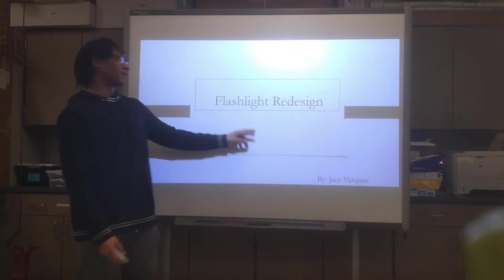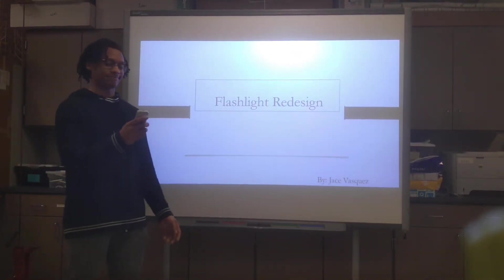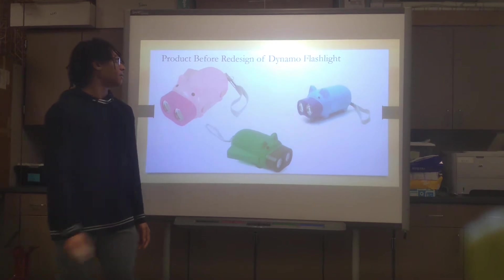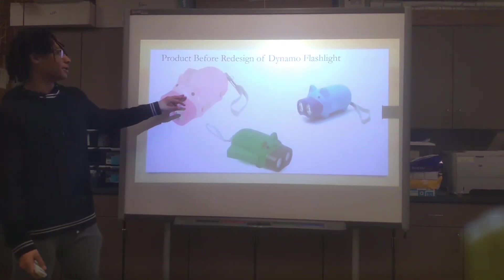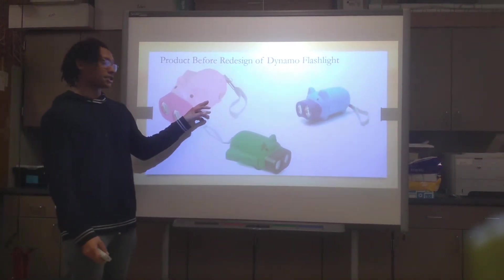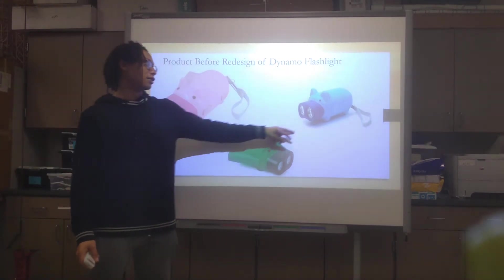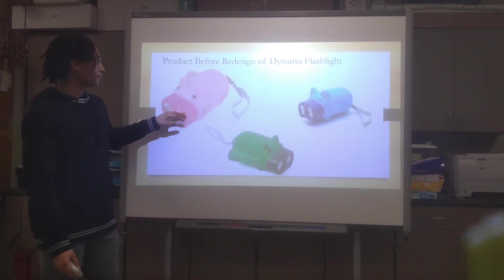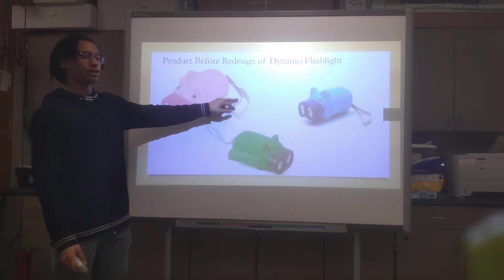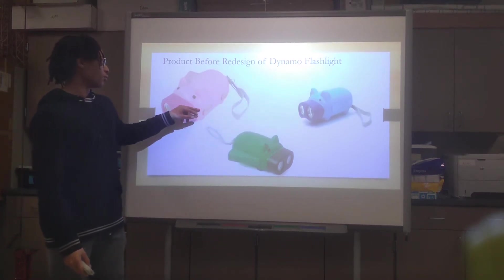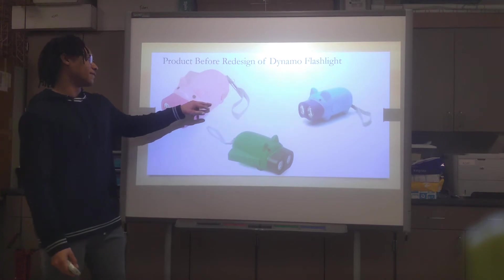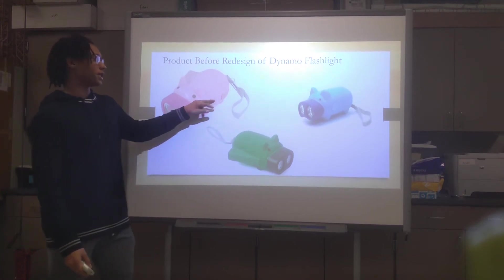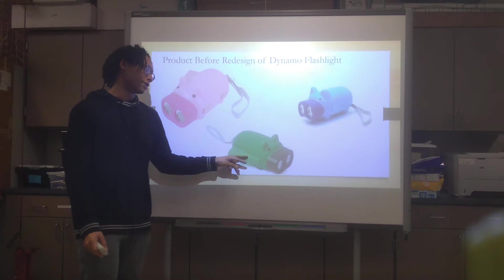This is Ross Kittes and here is my flashlight redesign. This is the product before the redesign. It is a dynamo flashlight. It comes in various colors. Its lights are in the nose of the flashlight. It has a bracelet or lanyard for you to hold it, and it comes with an on and off switch and a locking mechanism for the hand print.